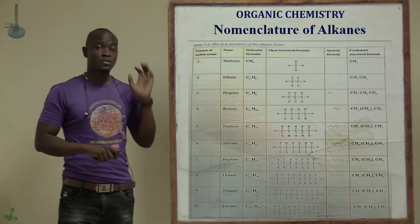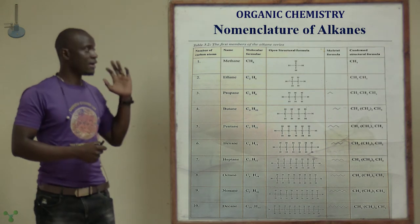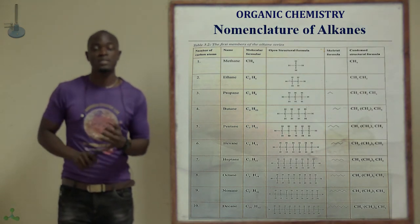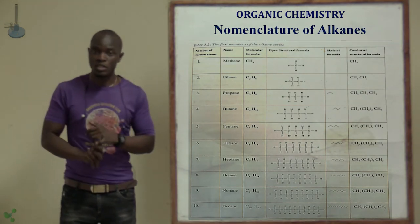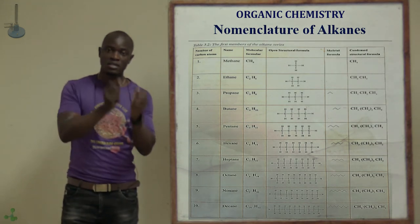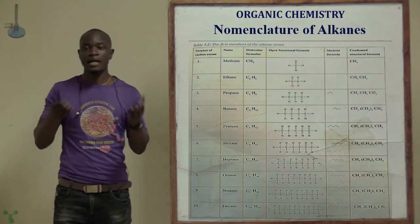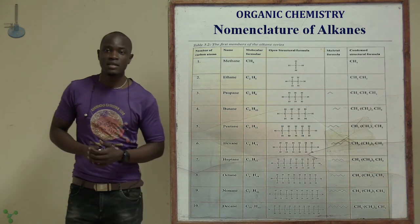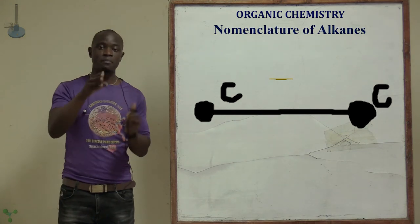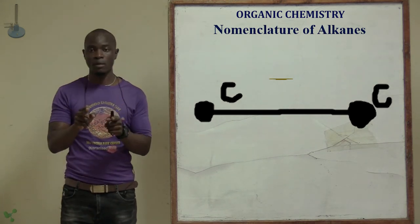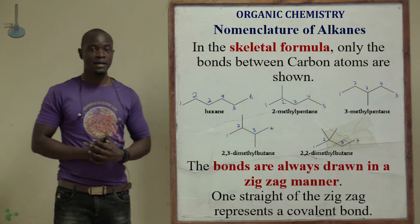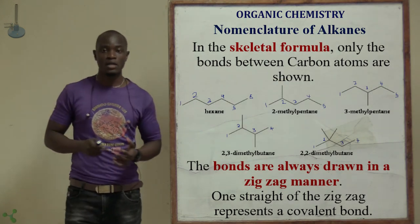This table summarizes the alkanes, giving the designated number of members, their names, molecular formulas, closed structural formulas, open structural formulas, and skeletal structures. In the skeletal structure, every line represents two carbon atoms, and every corner represents a carbon atom, as you can see.